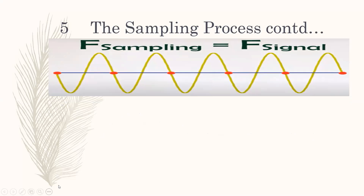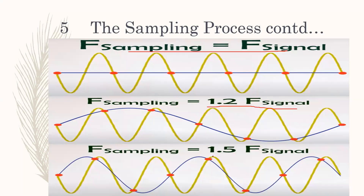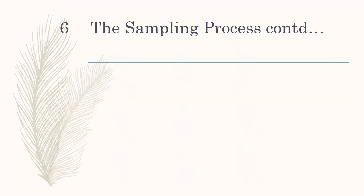When the sampling frequency equals the signal frequency, one sample is taken every time period of the sampling frequency. As I keep increasing the sampling frequency, more sampling points are obtained — from six samples, then seven, then eight and so on. Getting more samples helps us to avoid aliasing.